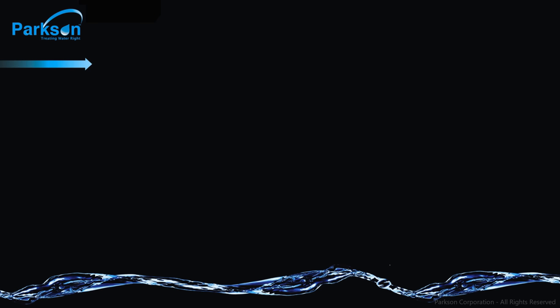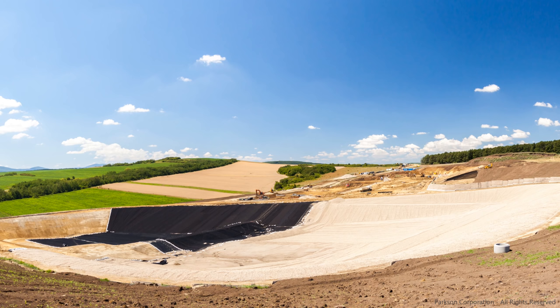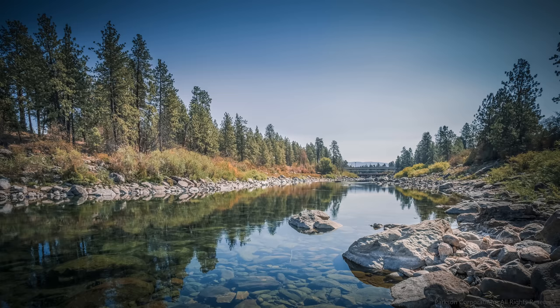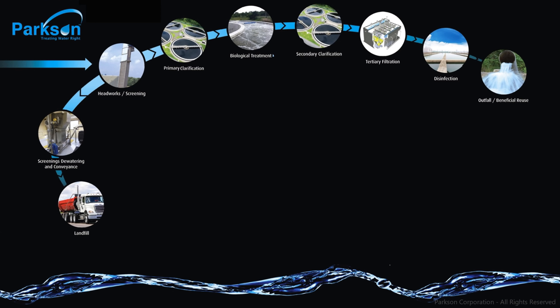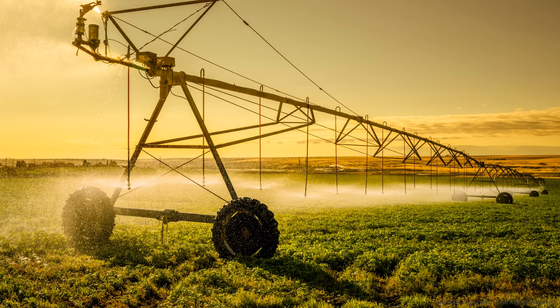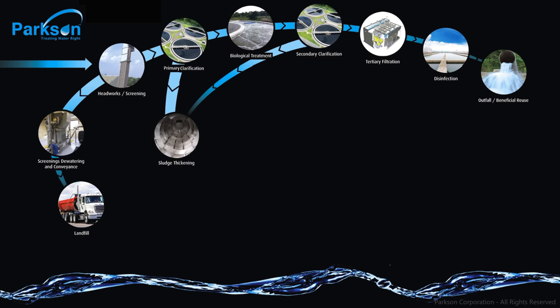Garbage and miscellaneous materials follow this path, eventually leading to a landfill. Water follows this path and is either discharged to a receiving water body, like lakes and rivers, or utilized for some form of beneficial reuse, such as irrigation or even to be used as drinking water. And biological solids follow this path and end up either in a landfill or some form of beneficial reuse, such as fertilizer.